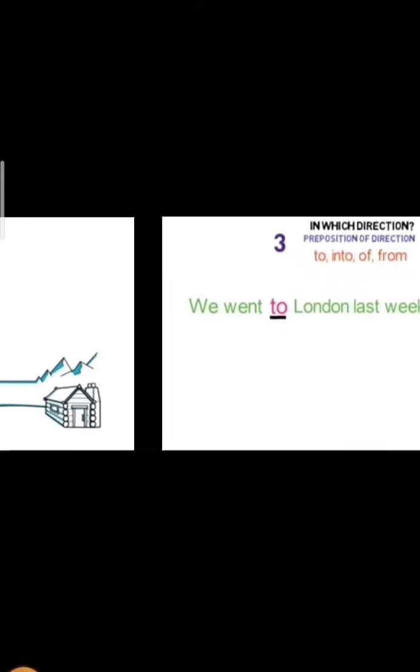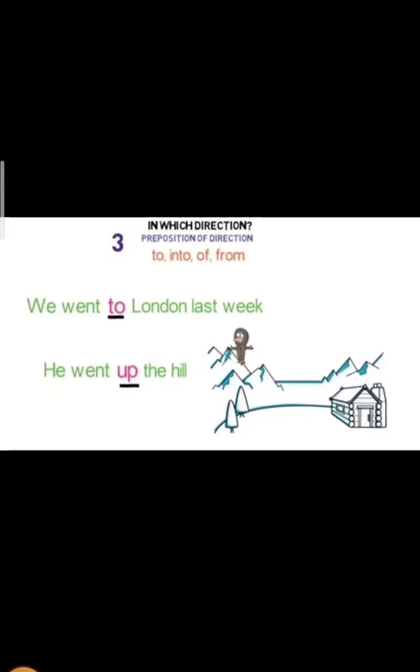For example: We went to London last week — ham log London gaye the pichle week. 'To' is used here to show direction — kis direction mein gaye, London. To is used as preposition of direction. Next example: He went up the hill — woh hill ke upar chala gaya. So 'up' shows in which direction he went — hill ke upar. Both 'to' and 'up' are used as prepositions of direction.